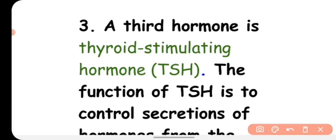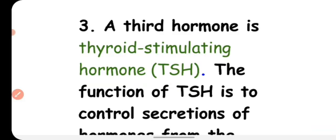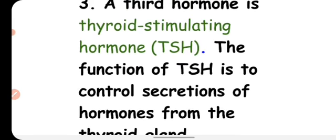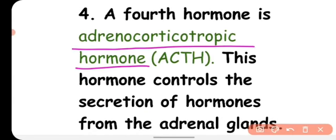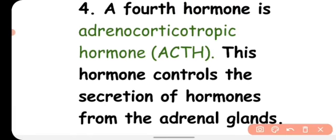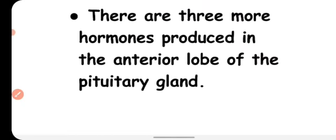The third hormone secreted from the adenohypophysis is Thyroid Stimulating Hormone (TSH), which controls the secretion of hormones from the thyroid gland. The fourth hormone is Adrenocorticotropic Hormone (ACTH), which controls the secretion of hormones from the adrenal gland.